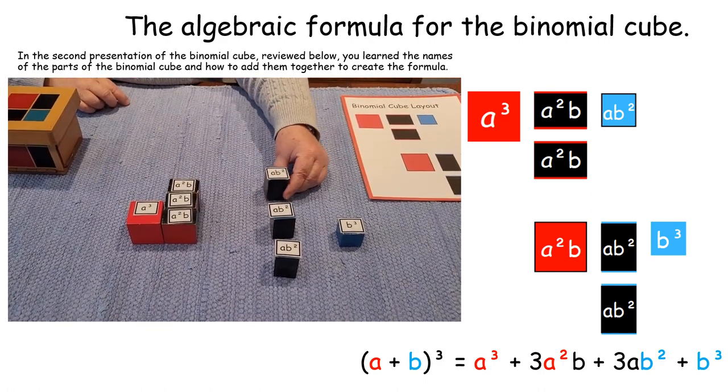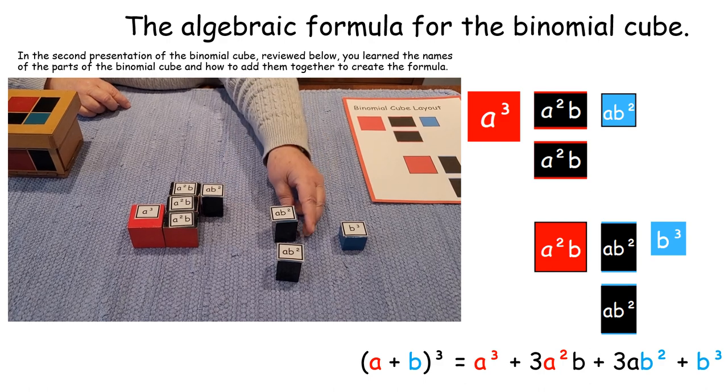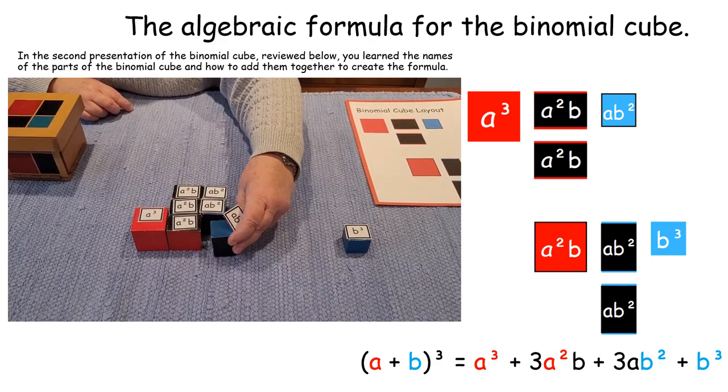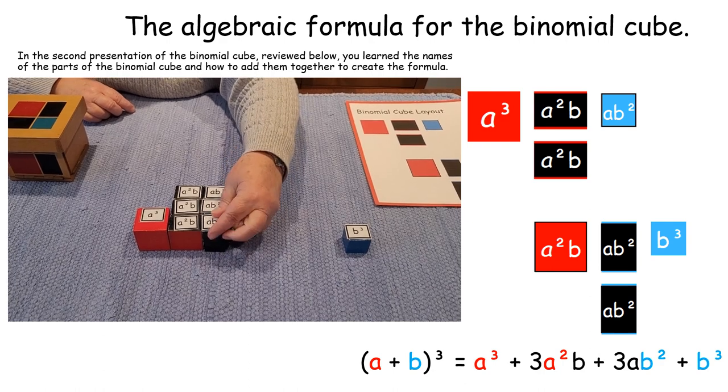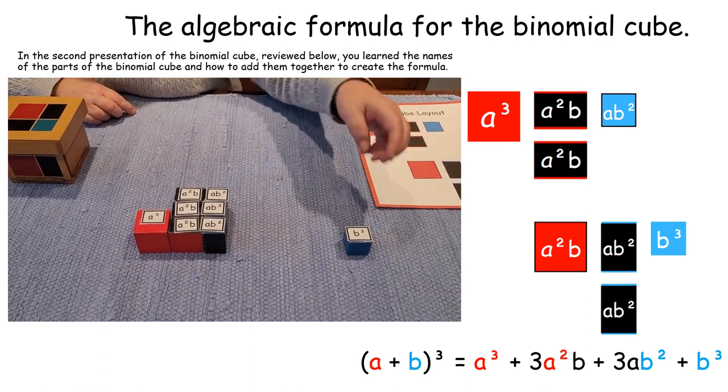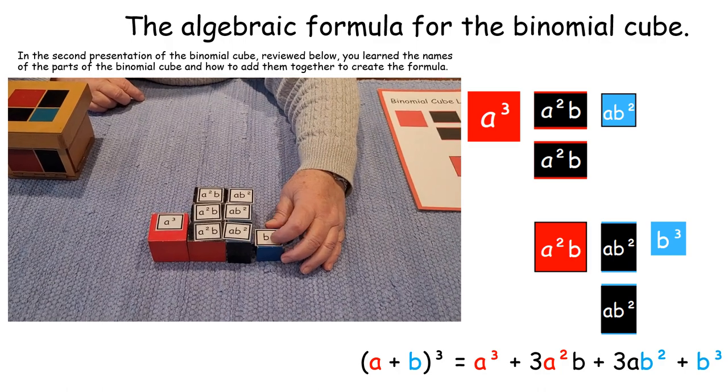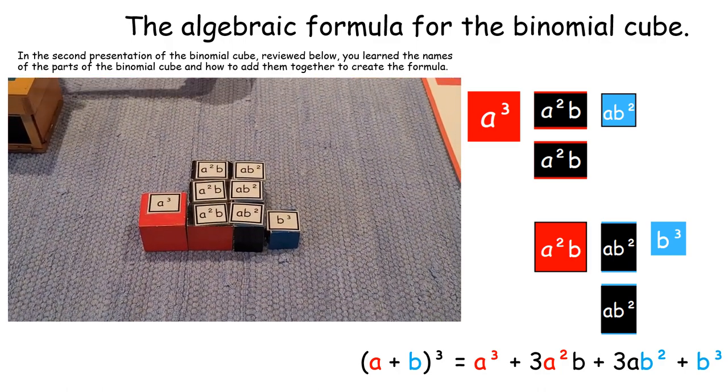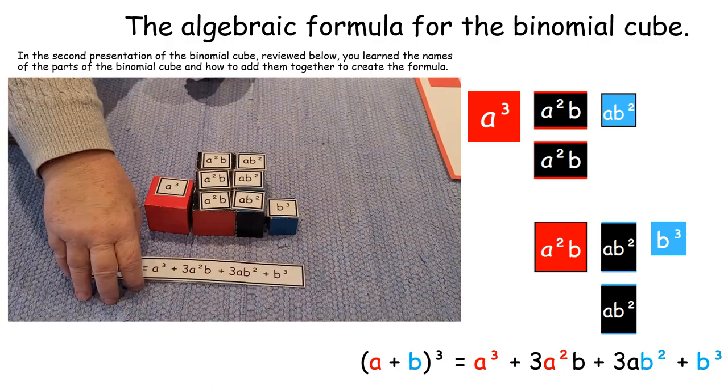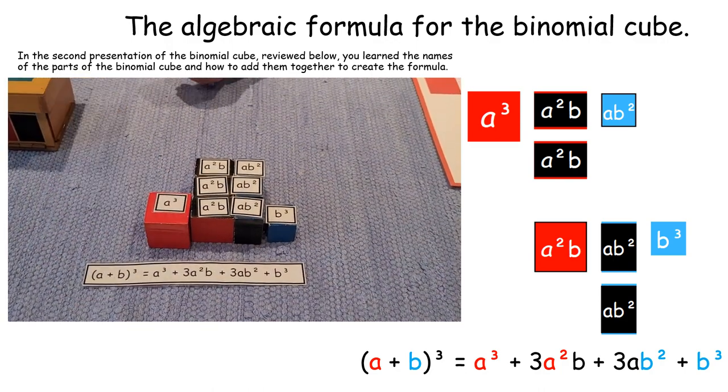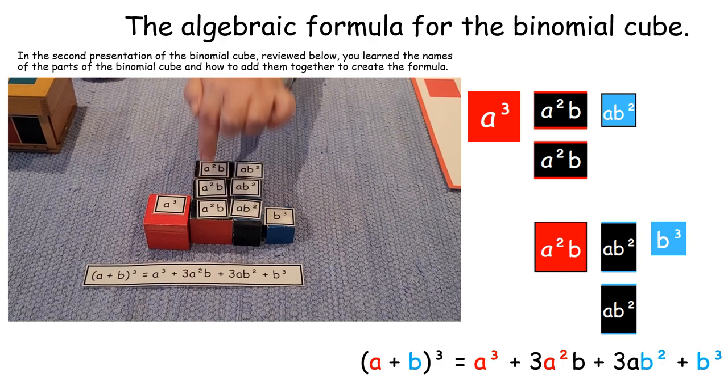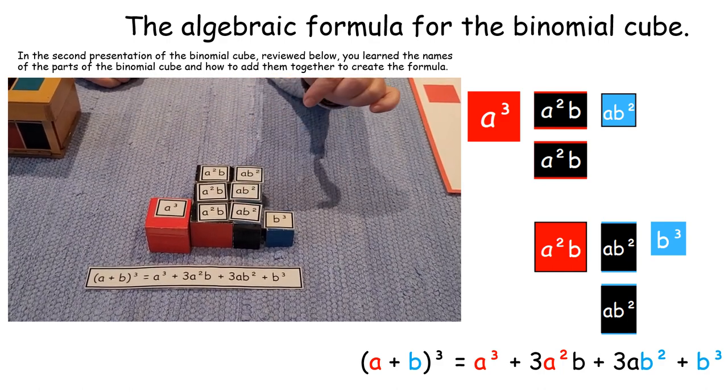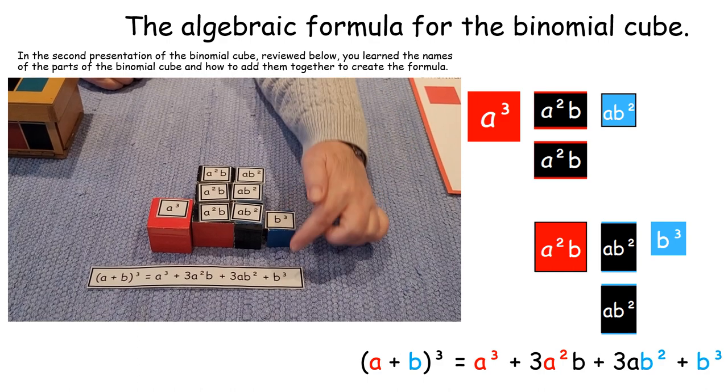We have one, two, three A B squared, and we have one B cubed. Now, to write the formula for the cube, we say A cubed plus three A squared B plus three A B squared plus B cubed.